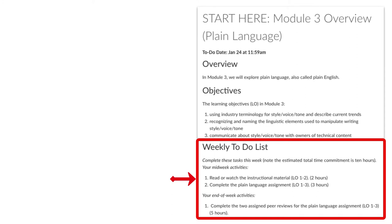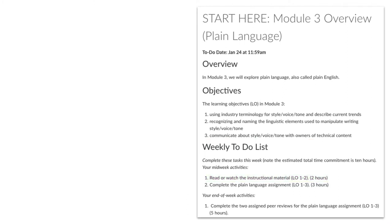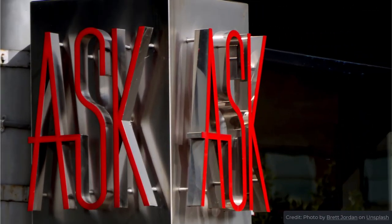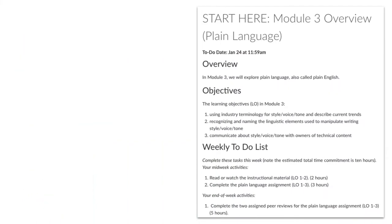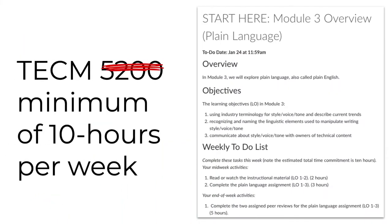For example, I recommend students spend two hours on the instructional materials before midnight in module three. If you end up spending far more time on an activity than I've indicated in the overview, please contact me so I can help you figure out why or where you're losing time. I want you to use those 10 hours per week effectively.